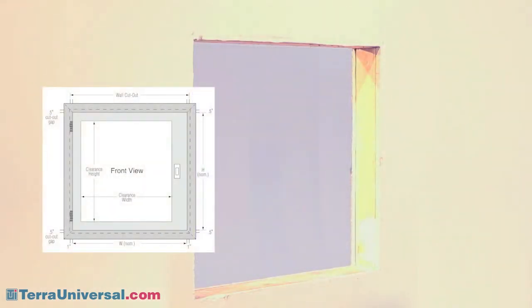Before you start, prepare a framed cutout that is two inches wider and one inch higher than the nominal width and height of the Clean Seam Plus chamber. To minimize disruption of your clean room, you can enclose this area with plastic sheeting to contain wall dust and debris.